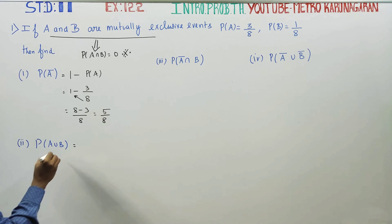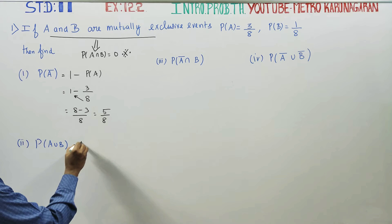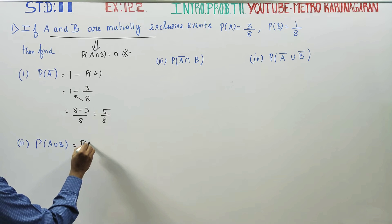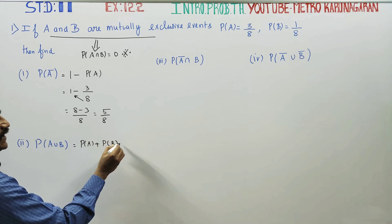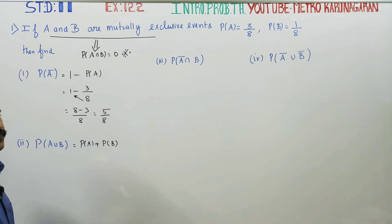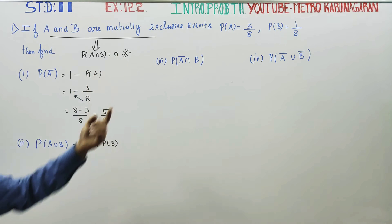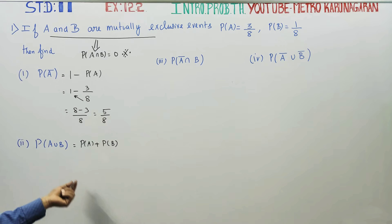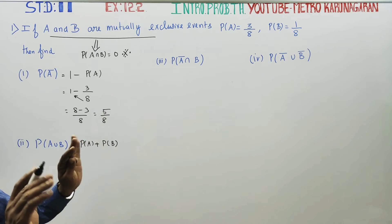For mutually exclusive events, the probability of A union B is equal to probability of A plus probability of B minus probability of A intersection B. Since A and B are mutually exclusive, probability of A union B equals probability of A plus probability of B.